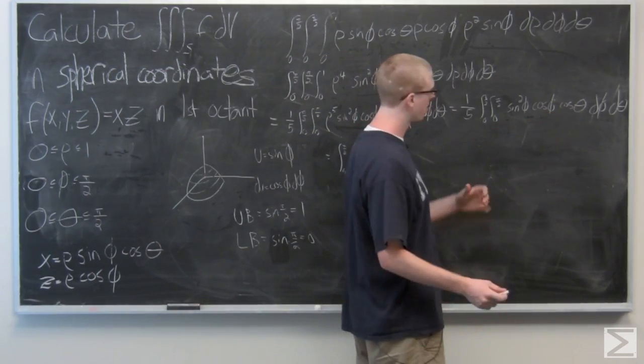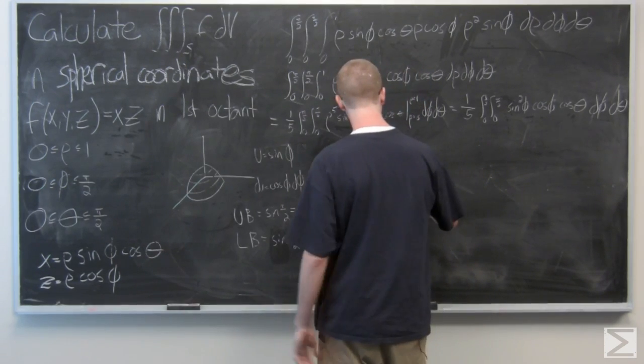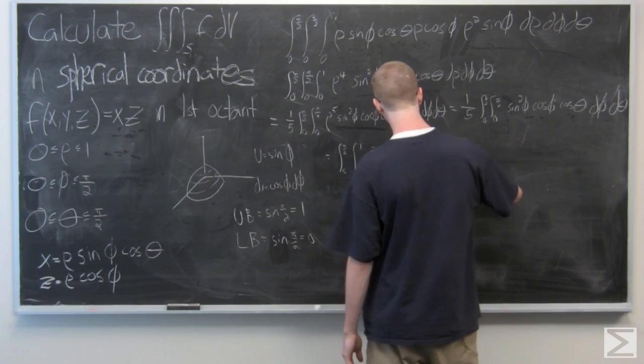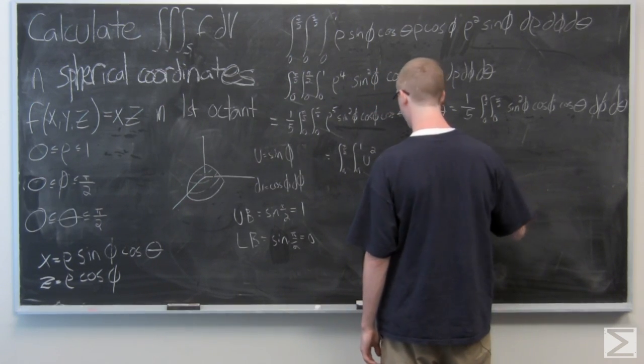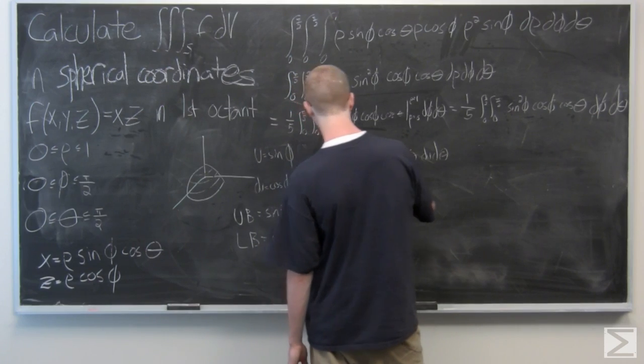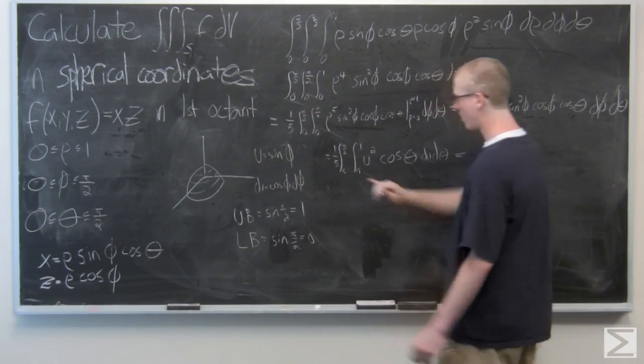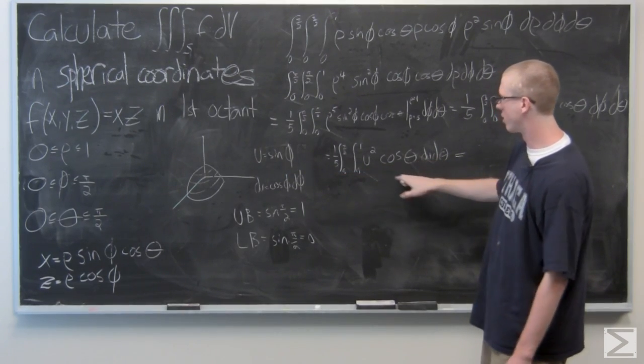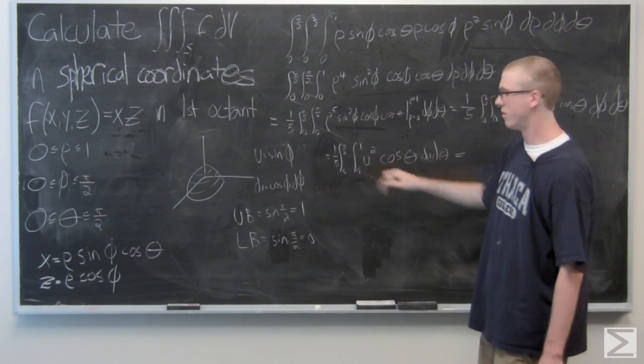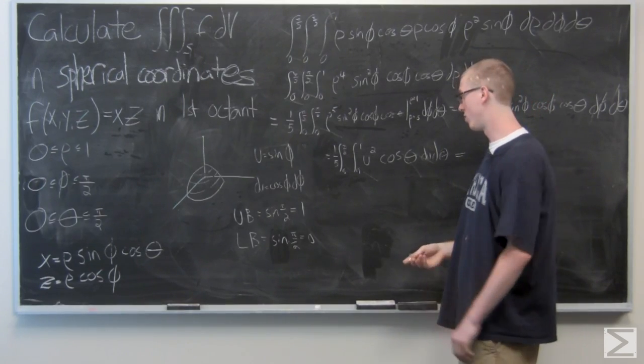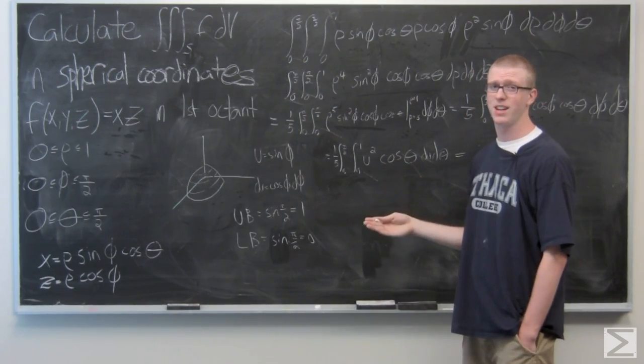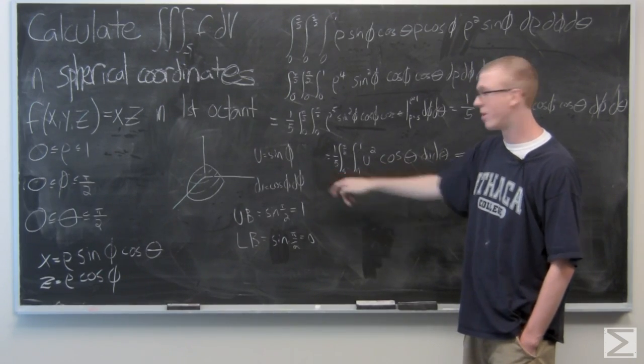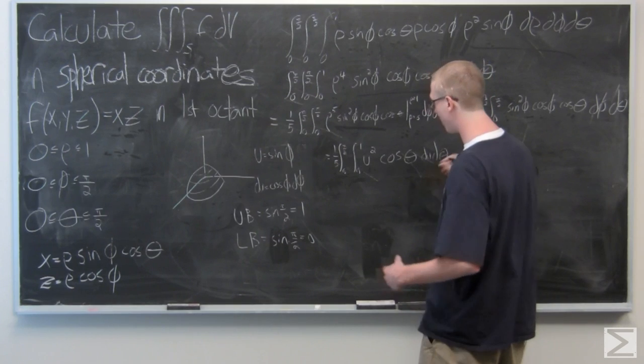And cosine theta is still a constant. All right, this is fairly simple to evaluate. So we have one-fifth times this whole integral. The integral of U squared is going to be one-third U cubed. And since cosine theta acts as a constant, that is the integral. And I'm just going to pull that one-third out right now and combine it with the one-fifth we have to make one-fifteenth out front.